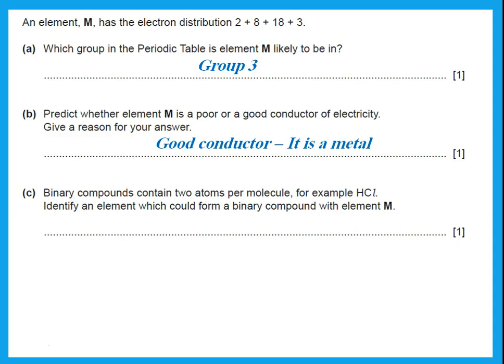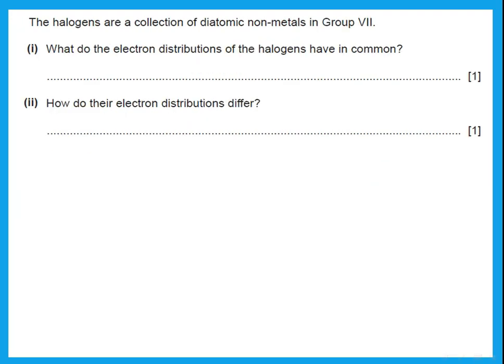Binary compounds contain two atoms per molecule. For example, HCl identify an element which could form a binary compound with element M. Actually, let us just say for now that it is nitrogen or phosphorus, something in group 5, and we will explain later on when we talk about valency what we mean by that. So just ignore this question for now.